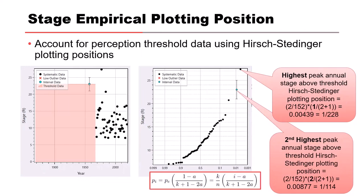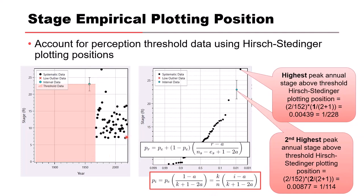We've now added historic data from 1957 as interval data and added a perception threshold using knowledge that the stage representing the best estimate for 1957 was not exceeded since the year 1868. For plotting positions to account for that perception threshold information, additional calculations are completed using the Hirsch-Stetinger plotting positions, just as discussed for flow. The formula accounts for how many points we have above the threshold, and for data points below the threshold, a different but similar calculation is completed. Adding historic data and the perception threshold changed the plotting position significantly — our biggest flood went from about 1 in 50 to about 1 in 225 AEP. This is important because it can be used to inform and assess the goodness of flow frequency translated to stage frequency curves.